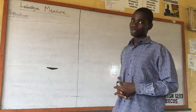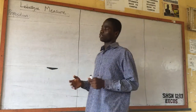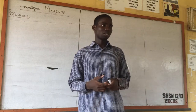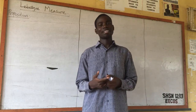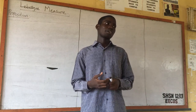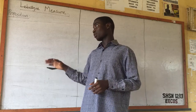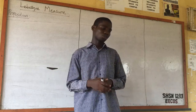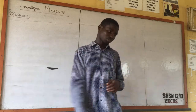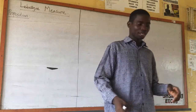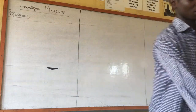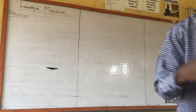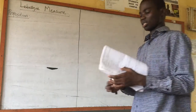We are going to continue from where we stopped. We have three theorems on the Lebesgue measure. It started from the outer measure and now we are on the Lebesgue measure. We are going to start with a proposition today — some propositions we need to prove on the Lebesgue measure and integration.